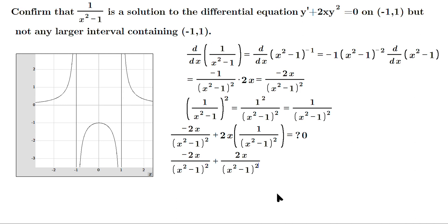We're checking this equals 0. Well, -2x + 2x would give you 0, and then in the bottom the bottoms are the same, you would have (x²-1)².